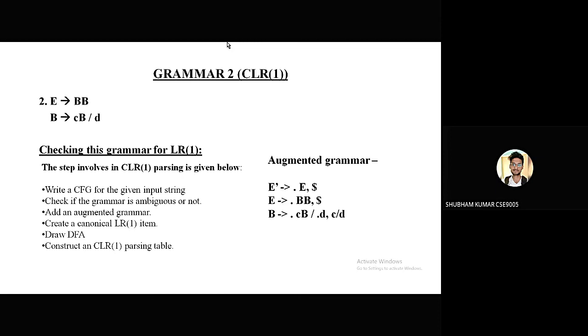Now we have to add an augmented grammar. As you can see, the part E dash tends to dot E comma dollar is our augmented part. The reason we are writing lookahead as dollar is because after dot E, there is no other terminal or non-terminal. We will go to the left-hand side and write first of E dash, and first of E dash is empty string, which is nothing but dollar.